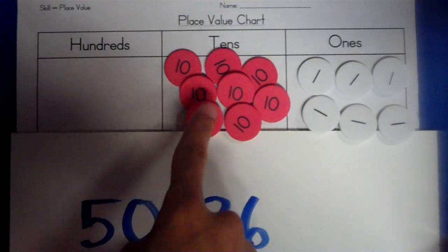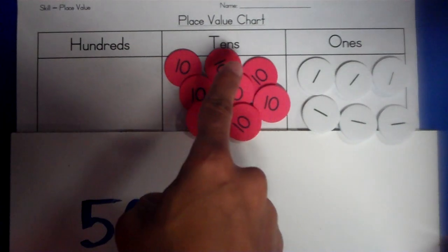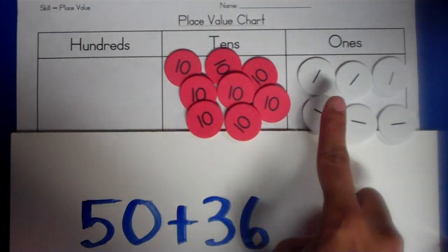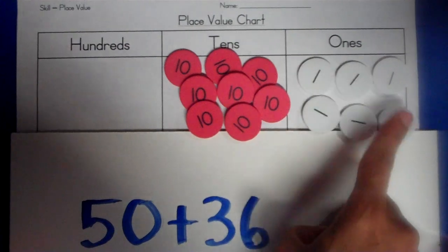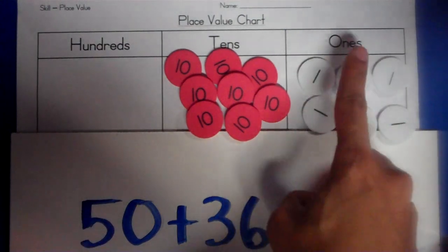1, 2, 3, 4, 5, 6, 7, 8. 8 what? 8 tens. And 1, 2, 3, 4, 5, 6. 6 what? 6 ones.